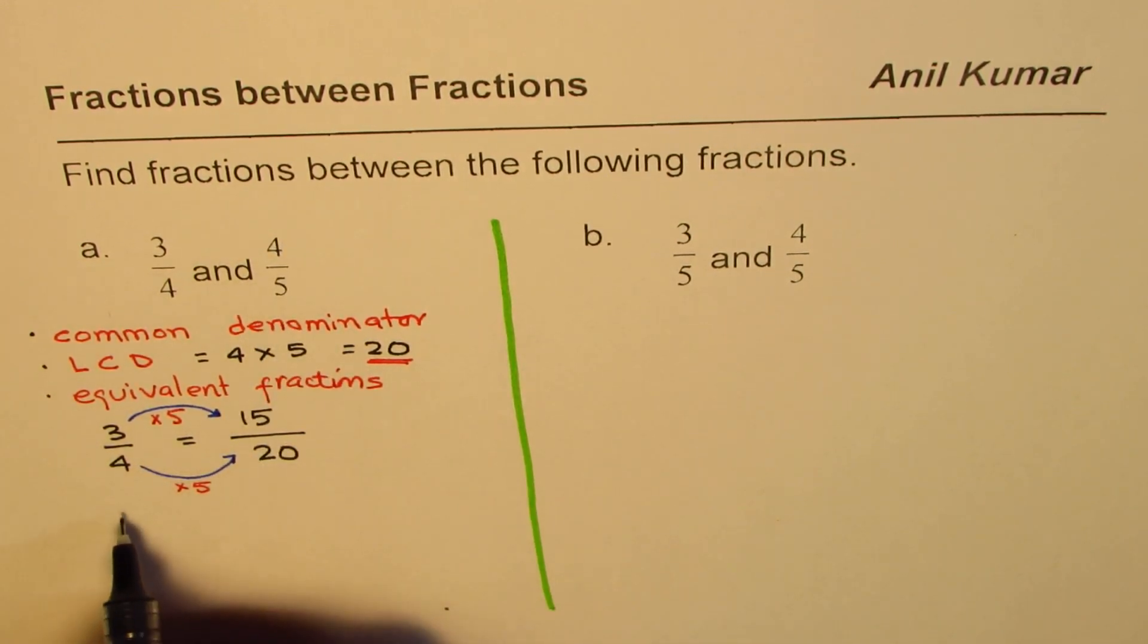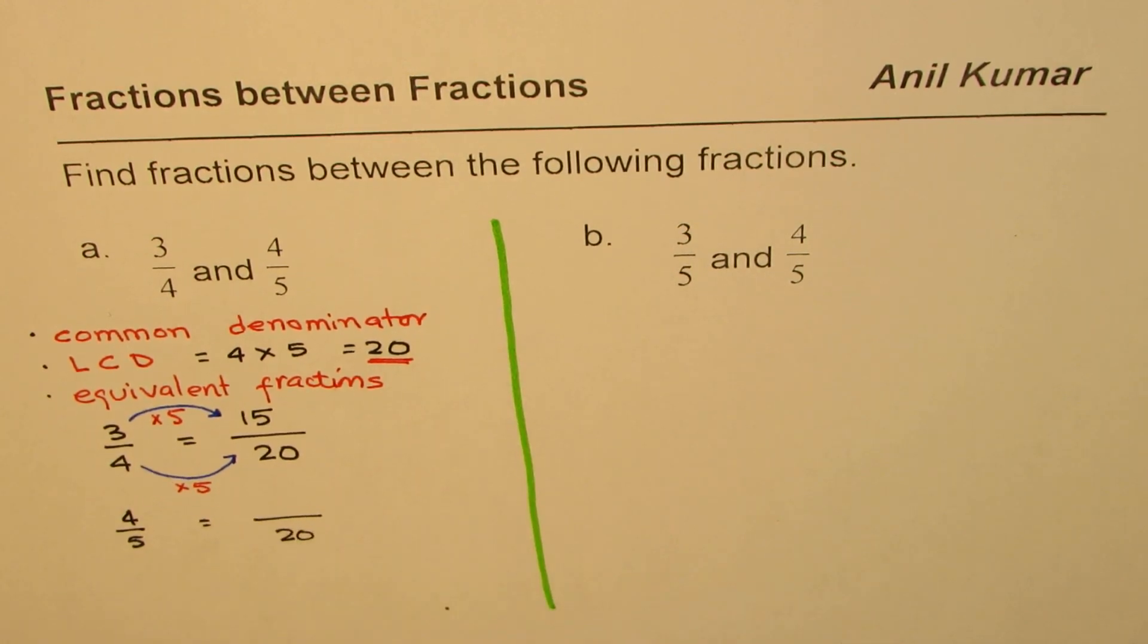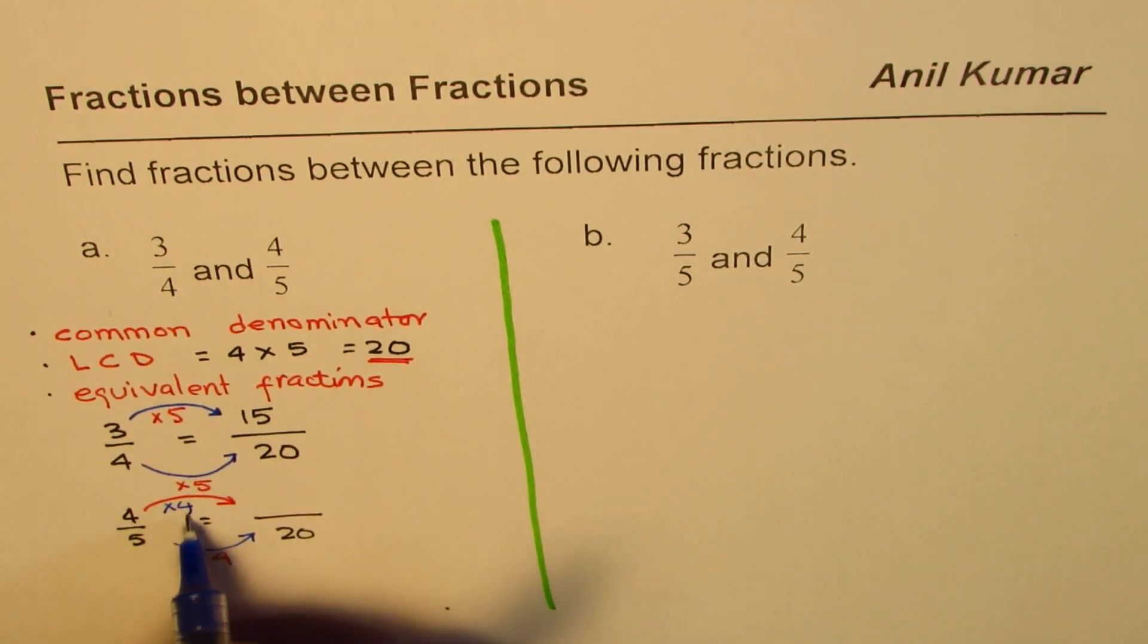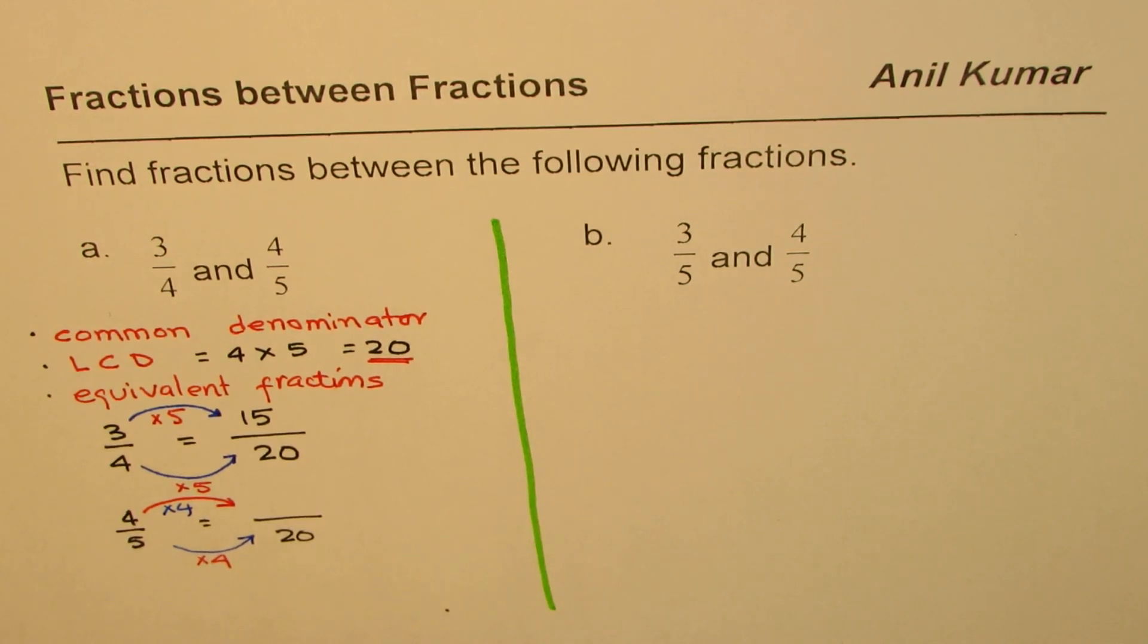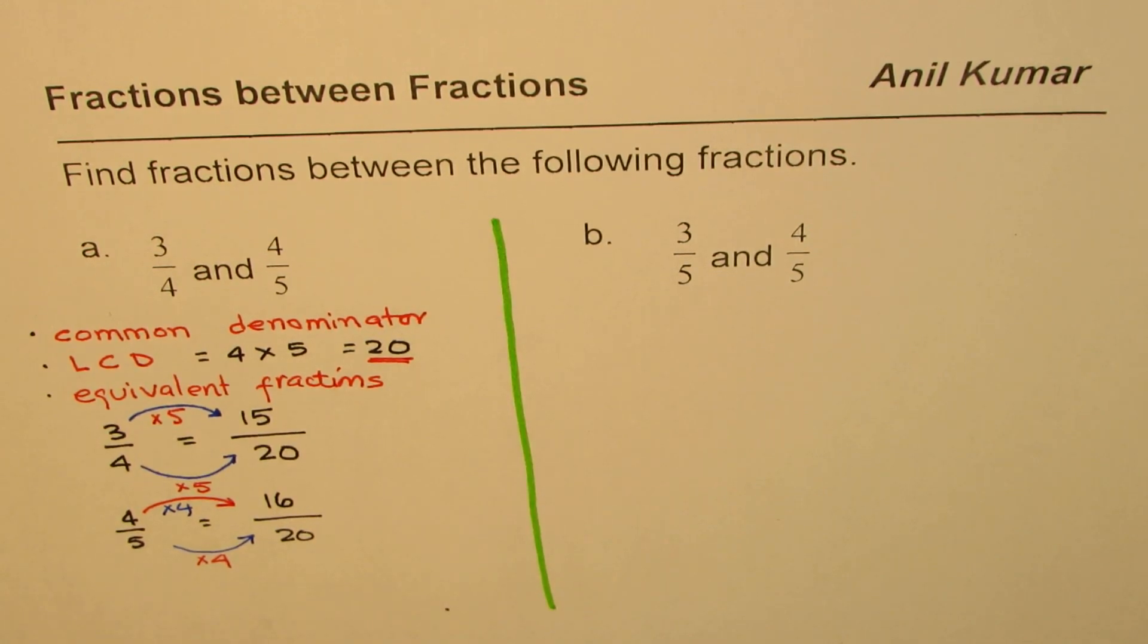Let's do it with 4 over 5. With 4 over 5 I'm looking for a denominator of 20. 5 times 4 is 20. So I have to multiply the numerator also by 4. 4 times 4 is 16. So we get 16 here. So we get lowest common denominator, same, but the numerators are 15 and 16. We are looking for a number between them.